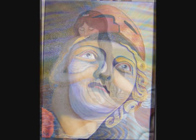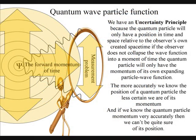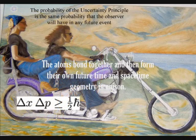This is what Socrates called a sea of beauty. Put in a more scientific way, Heisenberg's uncertainty principle of quantum mechanics is the same uncertainty the observer will have with any future event.